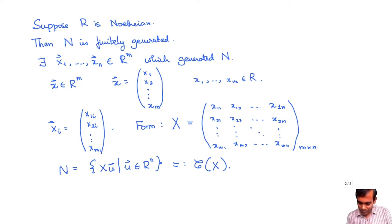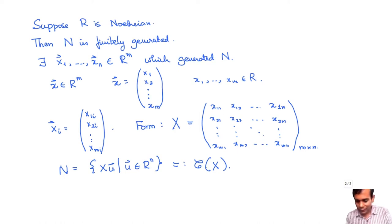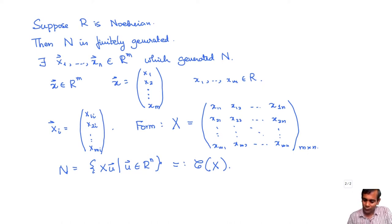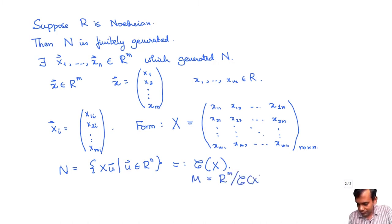So this is an M by N matrix. You can multiply it by column vectors of size N and get a column vector of size M. The column space of a matrix is precisely all linear combinations of its columns. So when we say x1, x2, ..., xn generates N, that means the elements of N are all in the column space of X — in fact, the column space of X equals N. So when R is Noetherian, every finitely generated R-module can be written as R^m mod col(X) for some matrix X with entries in R.